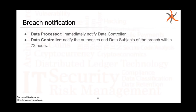The data controller must notify the authorities and the data subjects of the breach within 72 hours. This is not 72 working hours — it is 72 hours from the time of notification that you received that the data has been compromised. In certain cases the data controller and data processor are the same body, so you would know right away. Within 72 hours you must make sure the authorities and the data subjects are notified. Failure to do so will result in one of the fines — I believe it's the minor infraction — so 10 million euros or 2% of your global revenues.